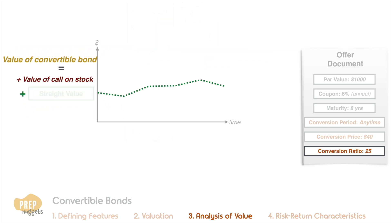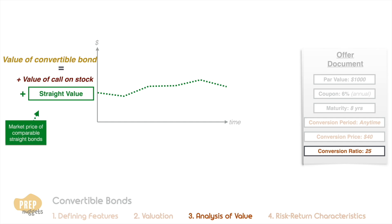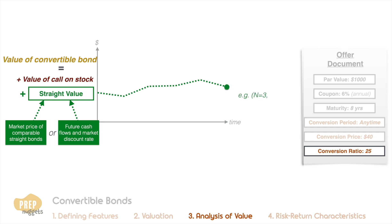The straight value of a convertible bond is the option-free value of the equivalent bond. This value can be determined based on the market price of comparable straight bonds, but more often than not, the arbitrage-free value of the bond based on its future cash flows and market discount rate should suffice. For example, if at this point the bond has three years to maturity and pays a fixed annual coupon of $60, assuming a flat yield curve of 2.5%, the value of the underlying option-free bond is $1,100.